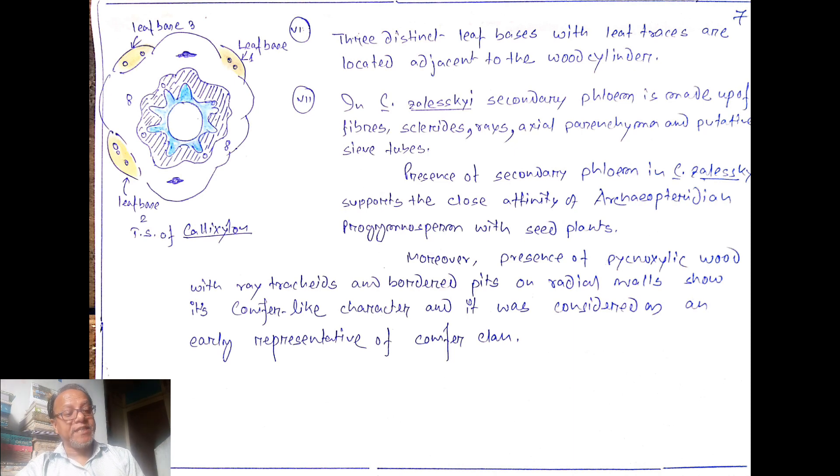Moreover, the presence of pycnoxylic wood with ray tracheids and bordered pits on the radial walls show its conifer-like character and it was considered as an early representative of conifer clan. This stem structure proves that it has some conifer-like character and some seed plant-like characters. This is about the stem anatomy of Callixylon, the form genus of Archaeopteris.